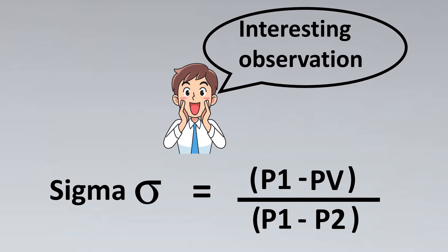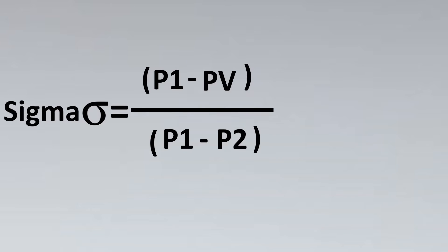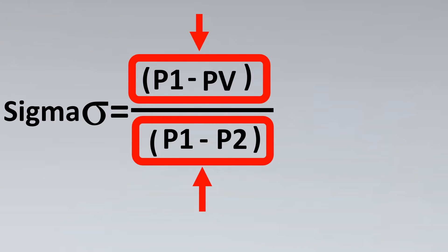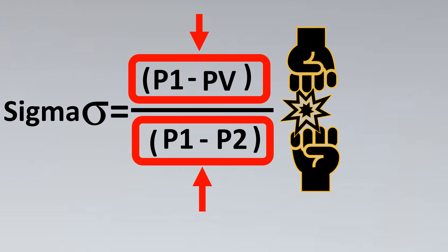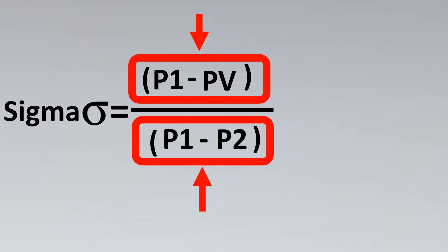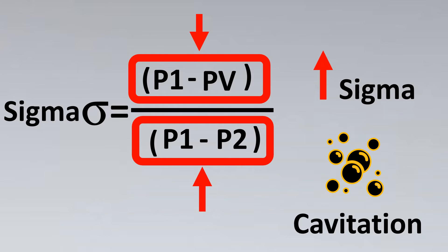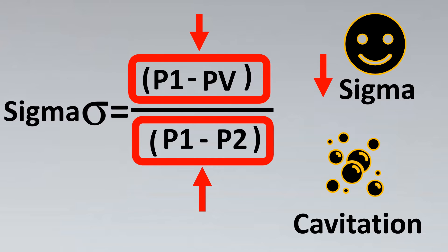But there is something more interesting to it - an interesting observation with respect to sigma value. The numerator and the denominator of sigma value are actually fighting with each other for cavitation. The higher the value of sigma (if the numerator wins), there's lesser chances of cavitation. If the value of sigma is less, there is very high chances of cavitation.